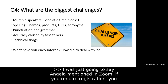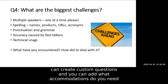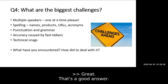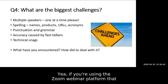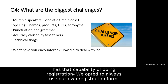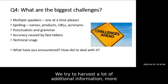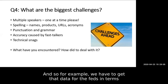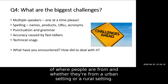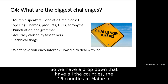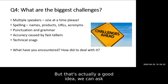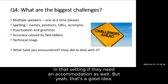Angela mentioned that in Zoom, if you require registration, you can create custom questions and add 'what accommodations do you need?' to help guide decisions, and then pull up participants and their needs. We opted to always use our own registration form because we try to harvest a lot of additional information — we ask things like where people are from, whether they're from an urban or rural setting, and we have a dropdown with all 16 counties in Maine. That's actually a good idea — we can ask in that setting if they need an accommodation as well.